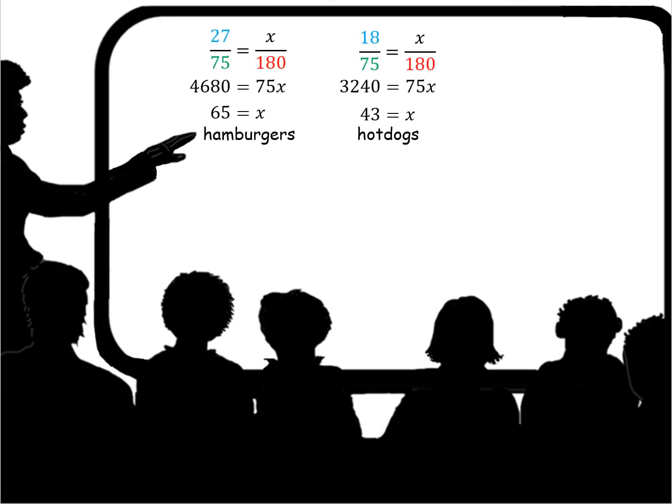So now that we have this information, how could we determine if we're close, or at least pretty close to being correct, that we have the right number? Well, if you add the number of hamburgers predicted, 65, and the prediction for hot dogs, 43, and the prediction for pizzas, 72, if you add all those together you get 180. Remember that 180 was our total population.